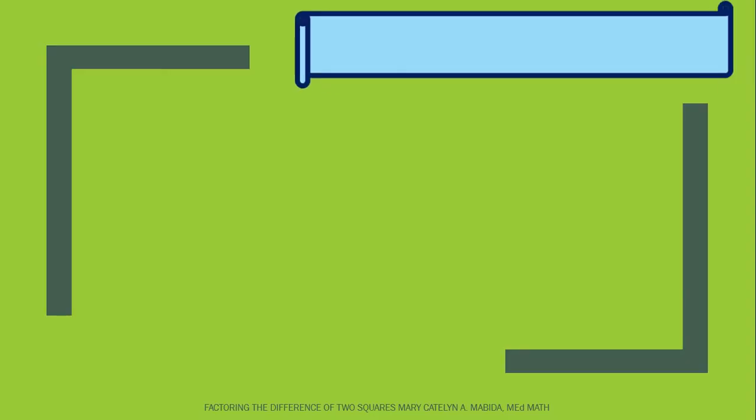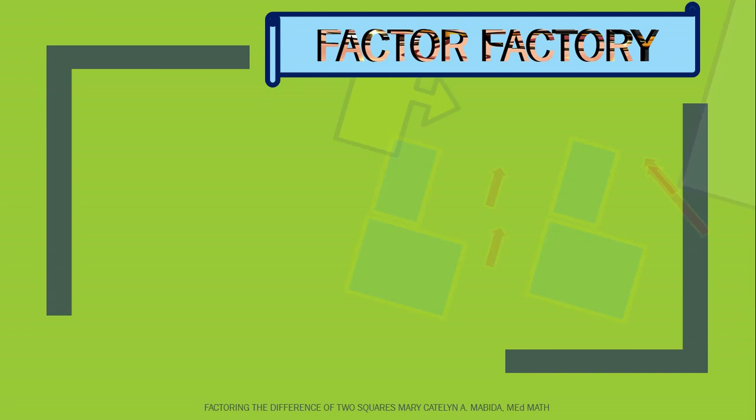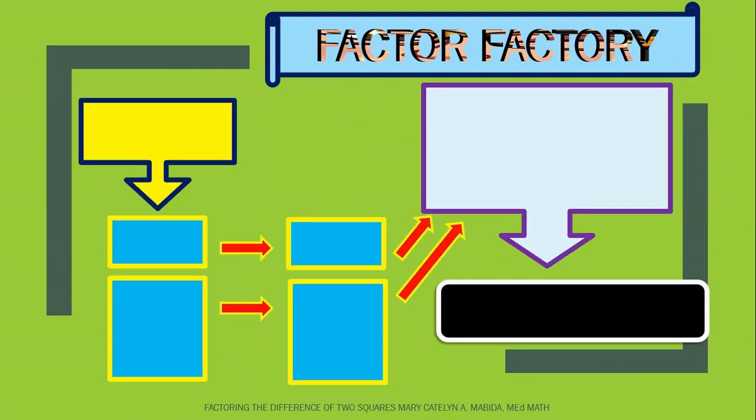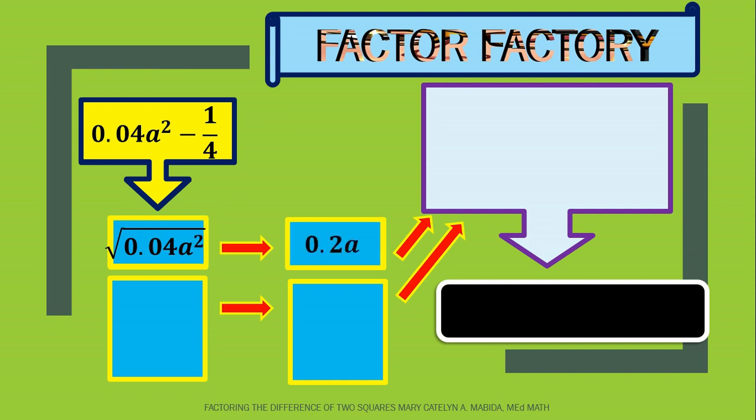Let's check out our factor factory. In our factor factory, we have all these boxes. And these boxes are our processors. For example, we have 4 hundredths a squared minus 1 fourth. This box right here is for the first term. And our first term is 4 hundredths a squared. The square root of 4 hundredths a squared is 2 tenths a. This second box right here is for our second term. And our second term is 1 fourth. The square root of 1 fourth is 1 half.